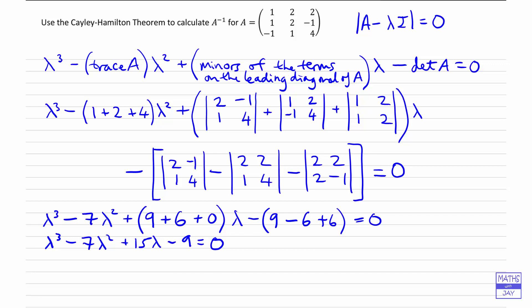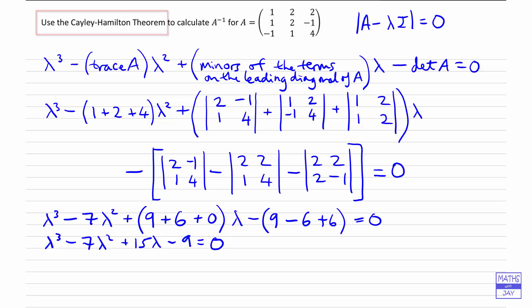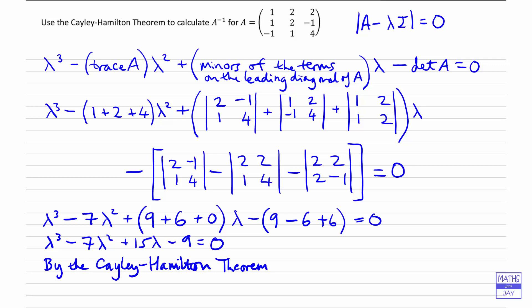We have written down the equation that gives us the eigenvalues for this matrix, but we don't actually want to find the eigenvalues. The Cayley-Hamilton theorem tells us that a matrix satisfies its own characteristic equation, so we can replace lambda by A to get A cubed minus 7A squared plus 15A minus 9I equals 0.